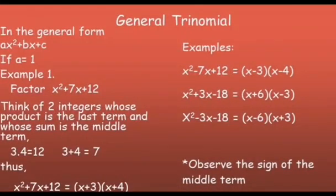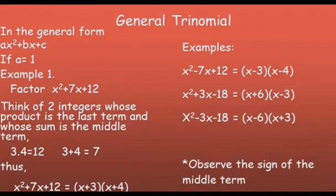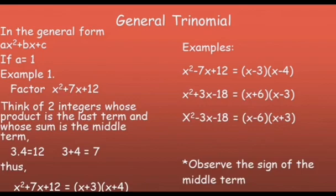General trinomial. In the general form ax squared plus bx plus c, if a equals 1, example: factor x squared plus 7x plus 12. Think of two integers whose product is the last term and whose sum is the middle term. The last term is 12 and the coefficient of the middle term is 7. The factors of 12 are 3 and 4, because 3 times 4 equals 12, and 3 plus 4 equals 7. Thus, x squared plus 7x plus 12 equals the quantity x plus 3 times the quantity x plus 4.